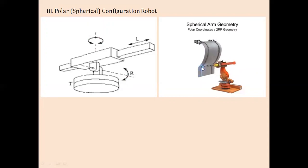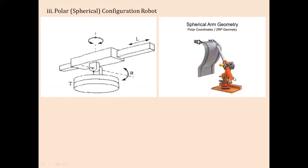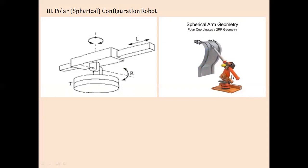In the polar configuration video demonstration, you can see the arm rotating along the vertical axis, then sliding rotation along the horizontal axis, and the arm moving downward. This shows how rotation takes place in a polar or spherical configuration, where the arm rotates along different axes and is used for welding operations.